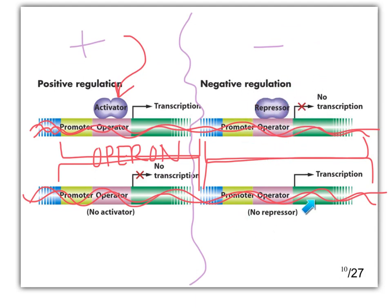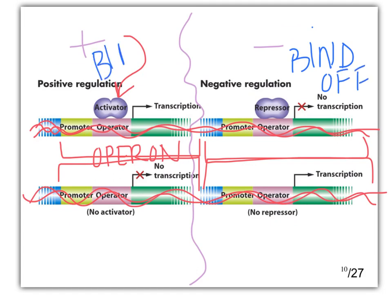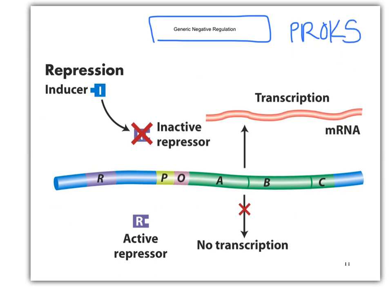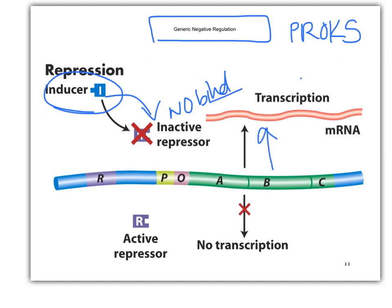If you remove the repressor, it turns on. So binding equals off and binding equals on — that's the big difference between positive and negative control. For generic negative regulation in prokaryotes: if we have an inducer available and it inactivates the repressor so it can't bind, no binding means we get transcription.